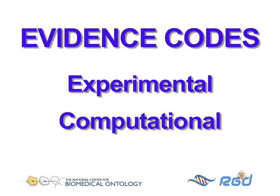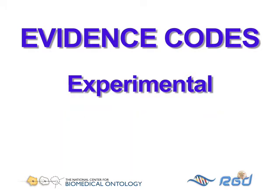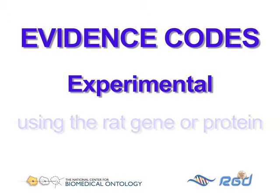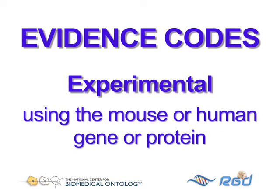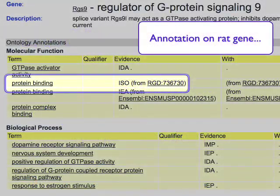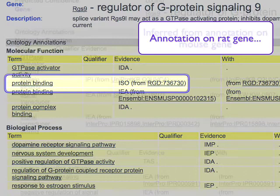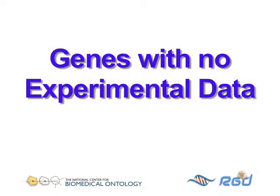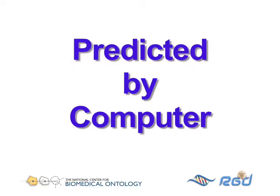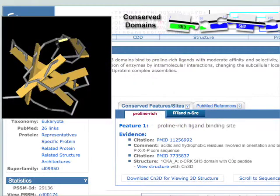Taking rat genes as an example, the group based on experimental evidence would include annotations made to rat genes based on experiments done using the rat gene or protein, as well as experiments done on the corresponding gene in mouse or human. In the latter case, it is inferred that the rat gene does the same thing based on its similarity to the gene in the other species. But then what about genes that no one has studied? For many genes that don't have experimental data, predictions of function, subcellular localization, and so forth, can be made based on computer algorithms that look at general similarities between genes or gene products, such as the presence of conserved domains in the protein sequence.